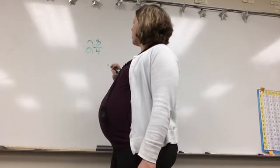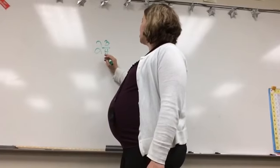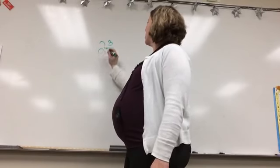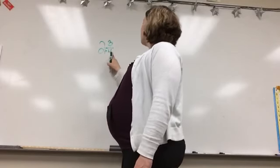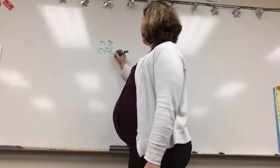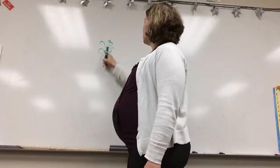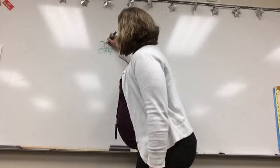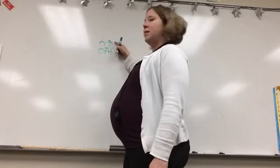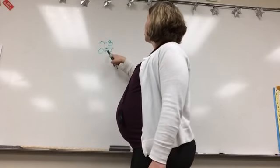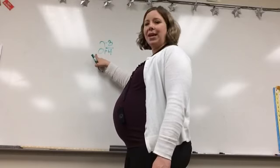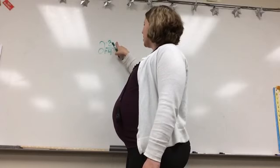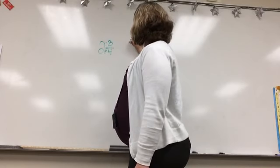The first thing I'm going to do is multiply the denominator by the whole number. So I'm multiplying 4 times 2. 4 times 2 is 8, and then I add the numerator to it. So 4 times 2 is 8, and 8 plus 3 is 11.